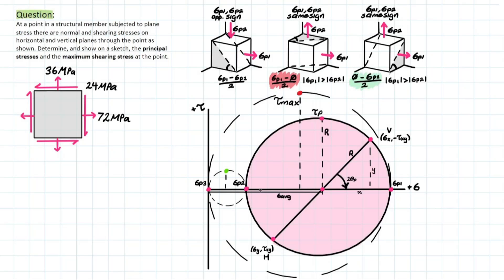Hello everybody, welcome back. Today we're doing another Mohr's Circle problem, and this one's going to be easier since we already covered the basics of Mohr's Circle. We're just going to be looking at what shear stress max is going to be, which is different from max in-plane shearing stress. The problem we're going to be using is going to help us demonstrate that.